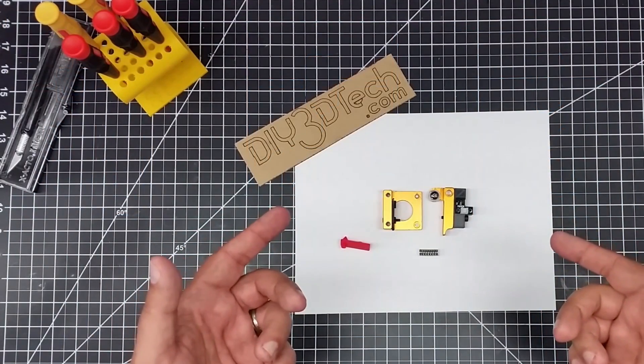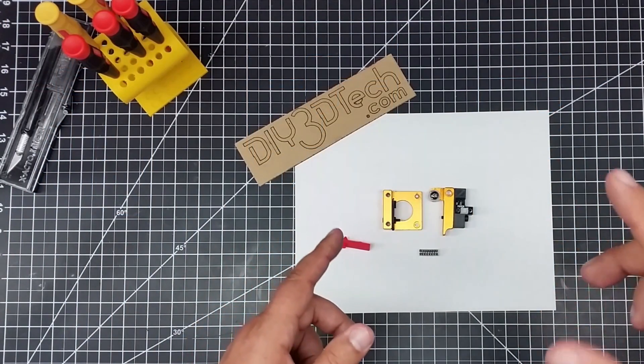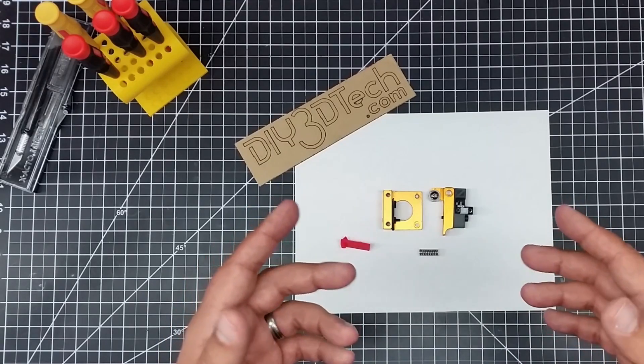Welcome to this episode of DIY3DTech.com. In this episode, we're going to be talking about the extruder of the AlphaWise U20.